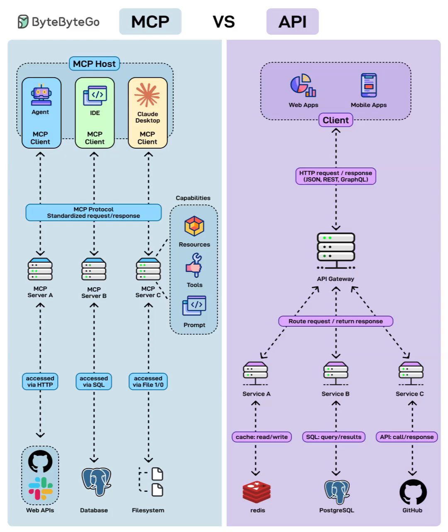For example, think of MCP as a universal connector that lets your local IDE, your AI assistant, and even open tools like LangChain communicate using one standardized format. So rather than juggling REST APIs for each tool, a single MCP layer gives AI agents structured access to everything — from data files to function calls — in context.